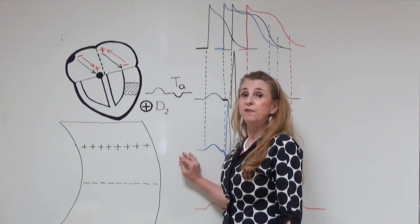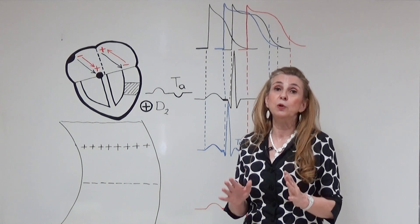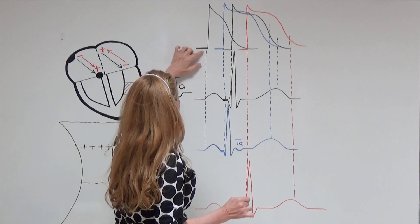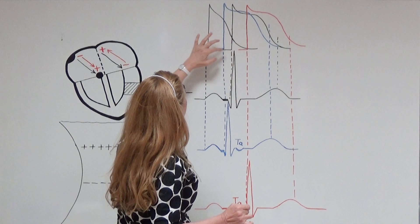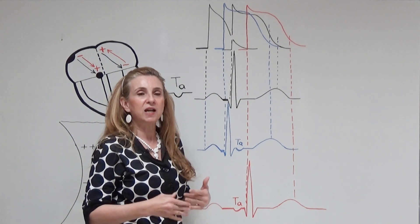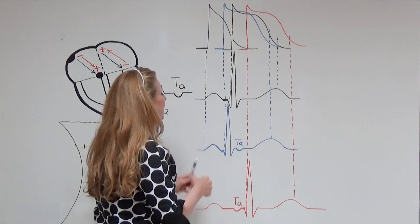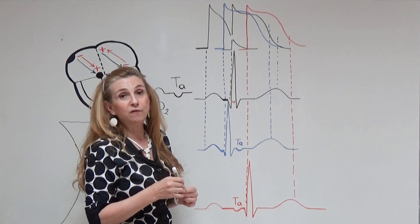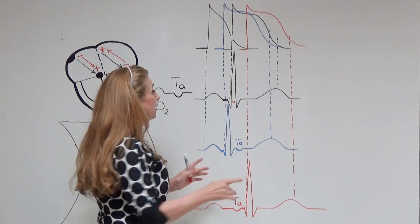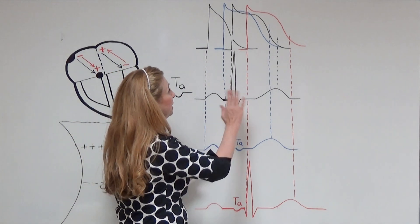The TA wave is the repolarization wave for the atria. However, TA wave is not visible in normal electrocardiography. Looking at the action potentials — one for the atria and one for the ventricles — you can see that repolarization of the atria is happening at the same time that the ventricles are depolarizing. So the TA wave would appear at the same position as the QRS. The TA wave is so small that it gets lost in the large QRS complex. In a normal ECG recorded from D2, we are not able to see the TA wave.